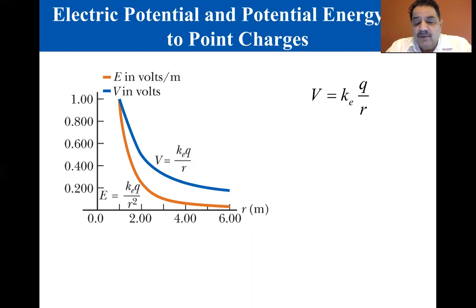The plot of this equation shows that the potential associated with a point charge decreases as one over r with increasing r. Remember that the magnitude of the charge's electric field decreases as one over r squared.